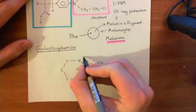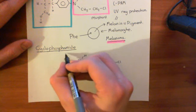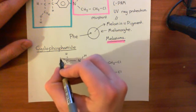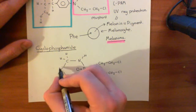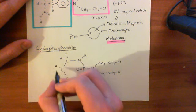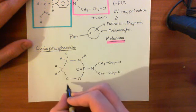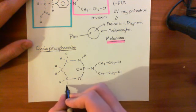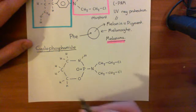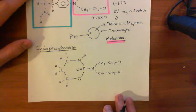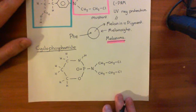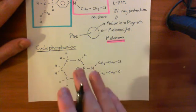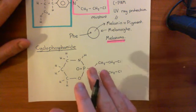Off this nitrogen you'll then have a hydrogen, and off all these three carbons you'll have two hydrogens each. So let's complete this structure by adding on a few hydrogens. This now is the structure of cyclophosphamide, and this is the most commonly used of all of the nitrogen mustard drugs.